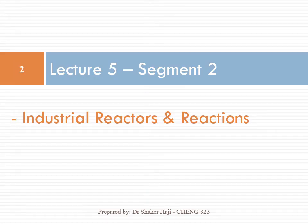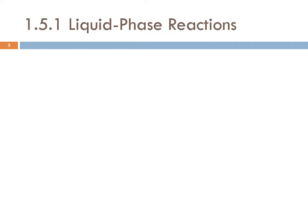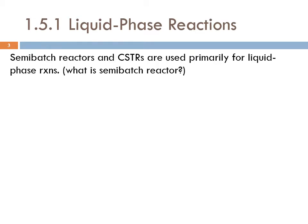Let's continue talking about industrial reactors and reactions. Let's talk about liquid phase reactions. CSTR is used for liquid phase reactions — semi-batch reactors and CSTRs are used primarily for liquid phase reactions. A semi-batch reactor is not a batch reactor where there is no input or output; it's semi-batch, so you could have either input or output.